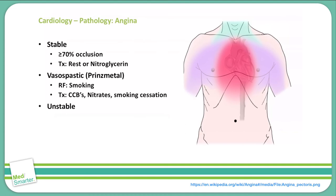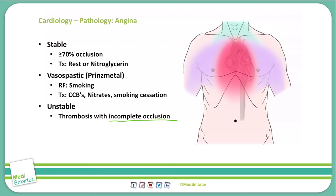The final category of angina is unstable angina. Unstable angina is due to thrombosis. It is important to note that this thrombosis is an incomplete occlusion of the coronary arteries — because it is incomplete, that does allow blood flow and keeps the myocardium from infarcting. EKG changes can be present with an ST depression or may not be, and they are very unspecific.